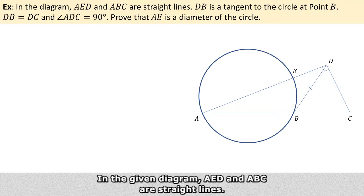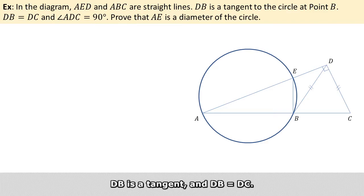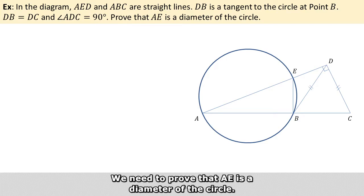In the given diagram, AED and ABC are straight lines. DB is a tangent, and DB equals DC. ADC is a right angle, and we need to prove that AE is the diameter of the circle.